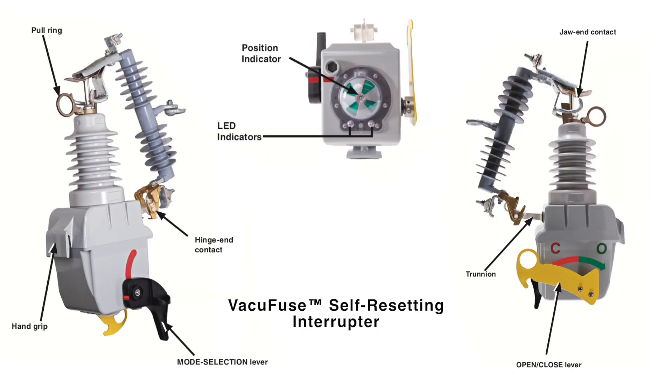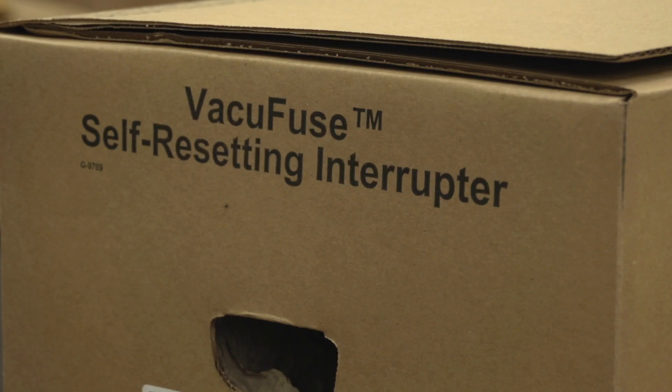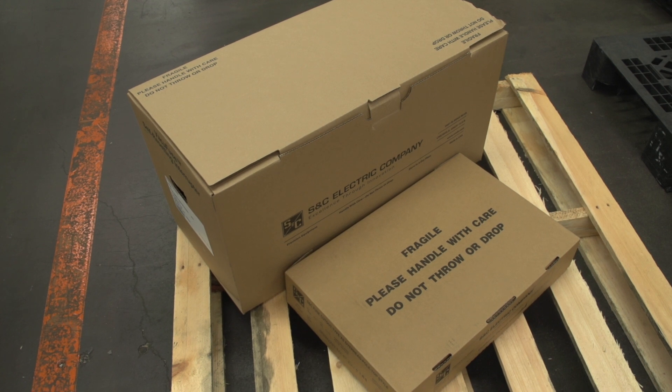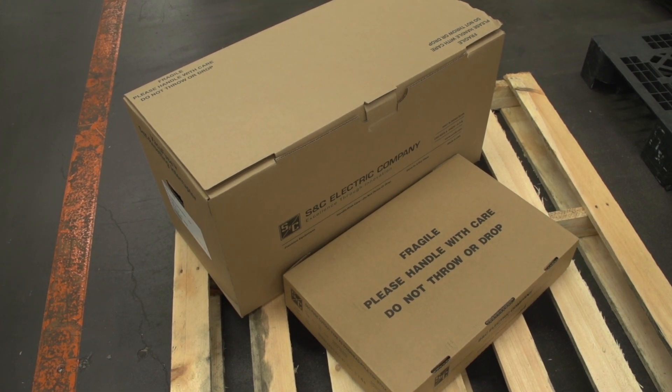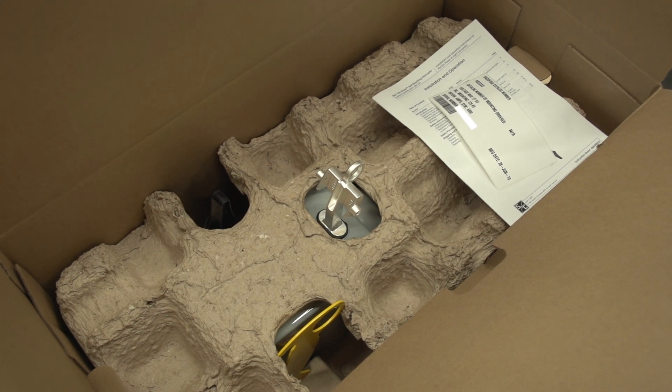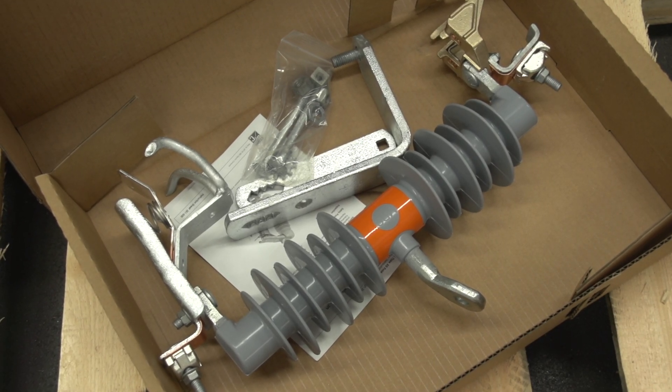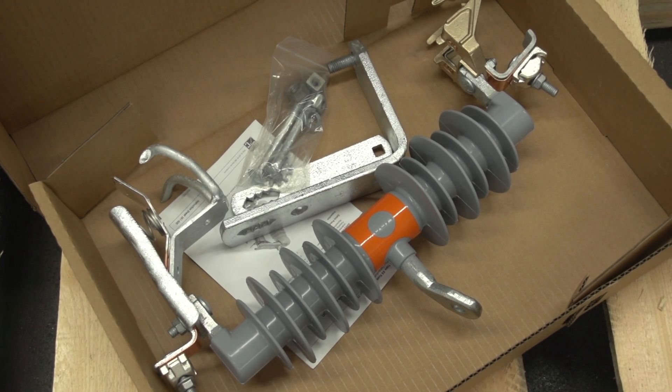Before beginning installation, familiarize yourself with the parts of the VacuFuse Self-Resetting Interrupter. A complete S&C VacuFuse Self-Resetting Interrupter for new installation consists of two shipping containers. They include a single-pole VacuFuse Self-Resetting Interrupter, a cut-out mounting and miscellaneous mounting hardware for securing the VacuFuse Interrupter to the pole.